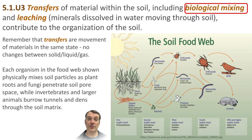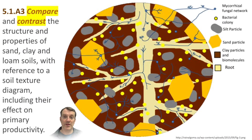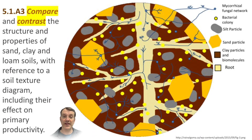Those organisms contribute to biological mixing, where they churn the soil, mix up the sand, silt, and clay particles, and blend them with all the organic matter. You should also be able to compare and contrast the structure and properties of soils based on their texture — that is, the ratios of sand, silt, and clay.